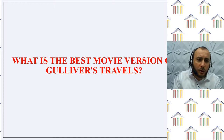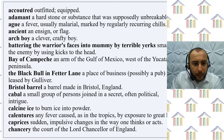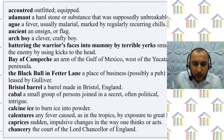And here is a short glossary of Gulliver's Travels. Let me read you some of these words. Ague: a fever, usually malarial, marked by regularly recurring chills. Ancient: an ensign or flag. Arch-boy: a clever, crafty boy. Bay of Campeche: an arm of the Gulf of Mexico, west of the Yucatan Peninsula. Bristol barrel: a barrel made in Bristol, England. Calcine: to burn into powder. Caprices: sudden impulsive changes in the way one thinks or acts.